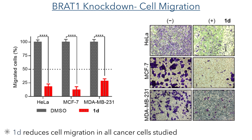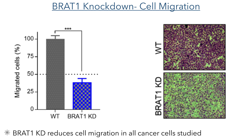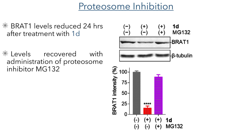Having identified several proteins involved in cell migration that were downregulated by administration of 1D, the authors decided to look at cell migration in cancer cells. In all three cancer cell lines studied, cell migration was drastically reduced after 24 hours of incubation with compound 1D. A similar experiment was carried out comparing BRAT1 knockdown cells to untreated HeLa cells, and this also showed a reduction in cell migration, though not as potent as was seen with compound 1D.